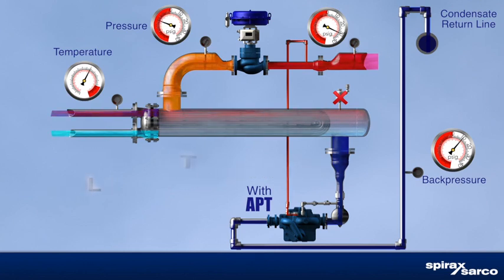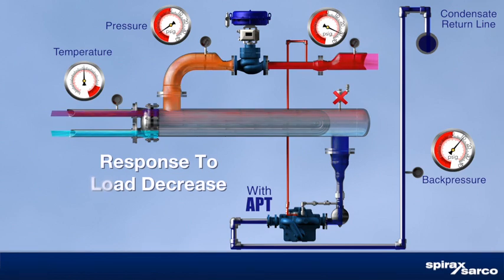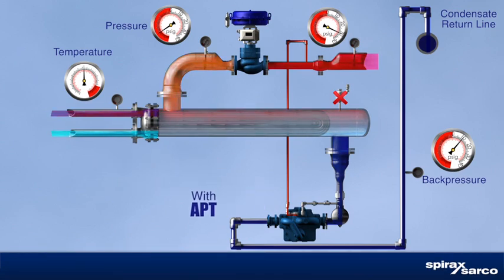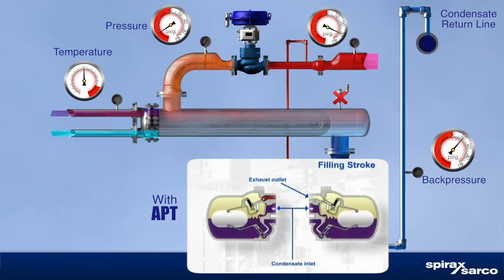By not using a vacuum breaker, you can reduce condensate acidity and large temperature swings in the heat exchange equipment. Heat transfer and control improve. Corrosion, water hammer, tube failure, excessive treatment chemical dosing, and high maintenance costs become distant memories.